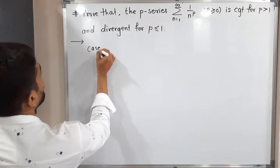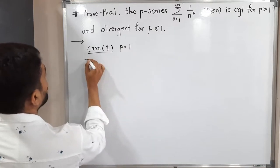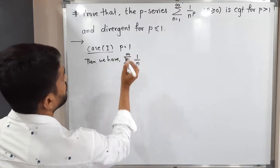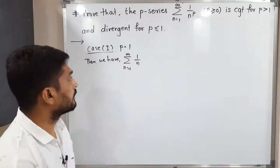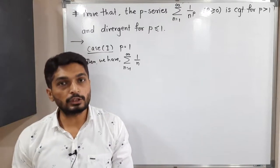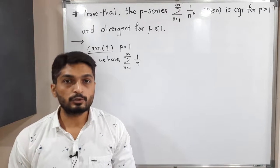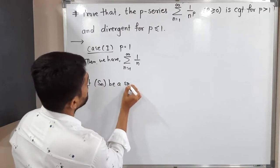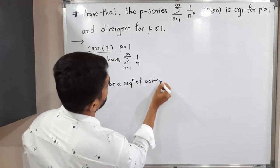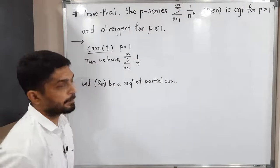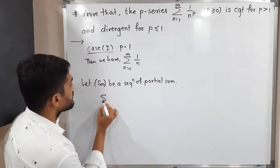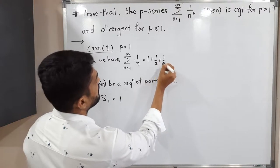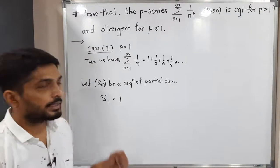Case 1: p is equal to 1. Then our series becomes summation of 1 by n. To check whether the series is convergent or divergent, we use the sequence of partial sums. Let S_n be a sequence of partial sums. Expanding the series: 1 plus 1/2 plus 1/3 plus 1/4, and so on. S1 is equal to 1, the first term.